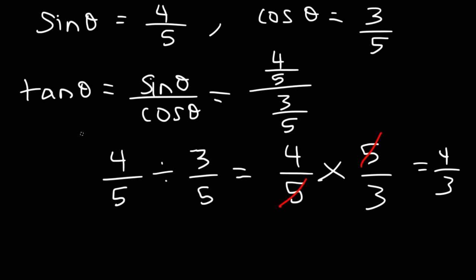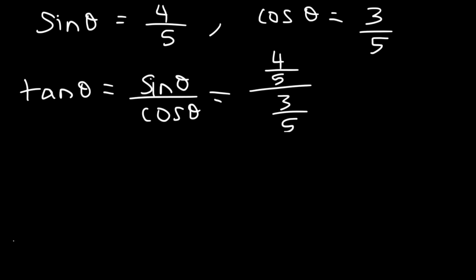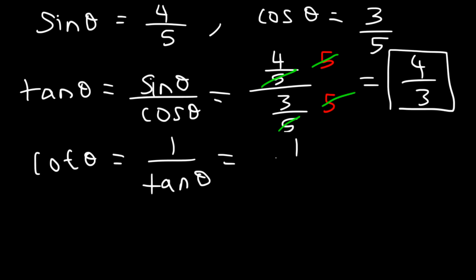Another way to get the same answer — a technique I like to use — is when you get a complex fraction like this, eliminate the denominator by multiplying the top and bottom by 5. If you do that, you'll be left with 4 over 3, and I think it's much faster to do it that way. Now once you have tangent, cotangent is the reciprocal of tangent. So just flip 4 over 3 and it becomes 3 over 4.